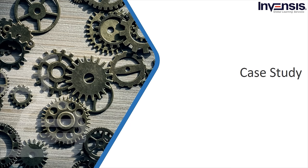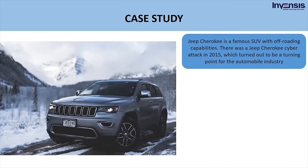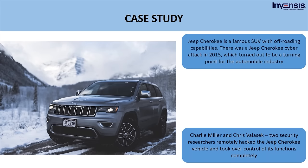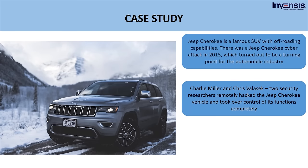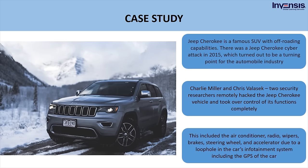We will now look into a case study of cybersecurity. Jeep Cherokee is a famous SUV with off-roading capabilities. In 2015, two security researchers — Charlie Miller and Chris Velasek — remotely hacked the Jeep Cherokee and took over control of its functions, including the air conditioner, radio, wipers, brakes, steering wheel, and accelerator, due to a loophole in the car's infotainment system. This was the first time a remote cyber attack was done on a vehicle. After this attack, Fiat Chrysler recalled more than 1 million hackable vehicles for security patch updates.